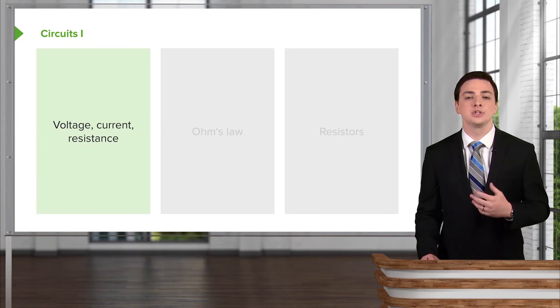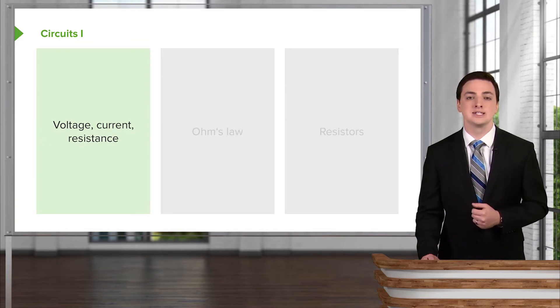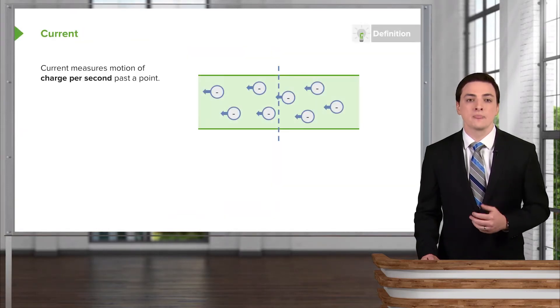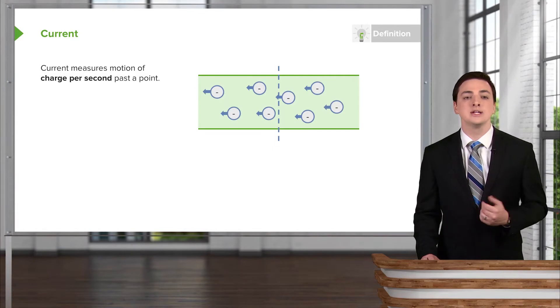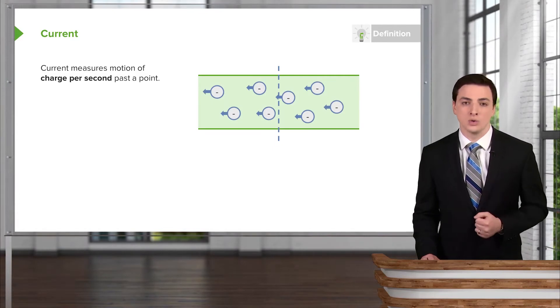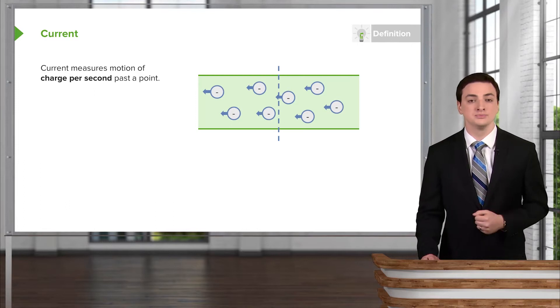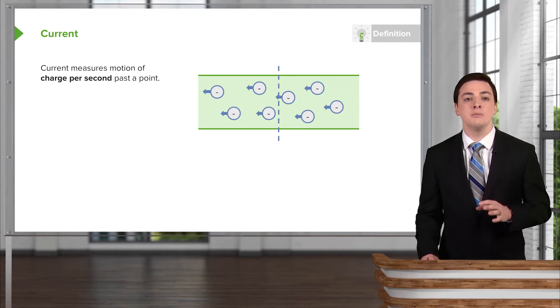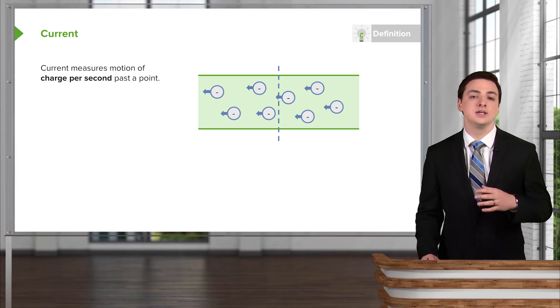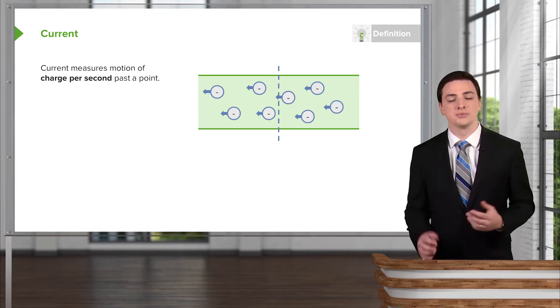So first let's introduce three variables: the voltage, current, and then the resistance. The current in a circuit, which will be one of the most important quantities that we're trying to find or measure, is telling you how much charge per second is flowing past a given point.